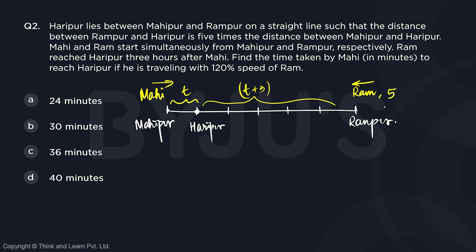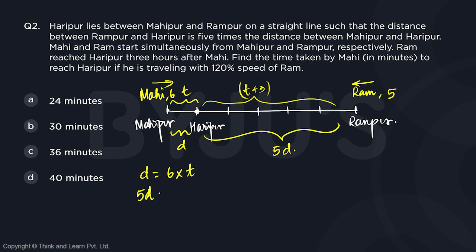If we take the speed of Ram to be 5, then 120% of 5 is 6, so Mahi's speed is 6. If the shorter distance is d, the entire distance is 5d. Mahi covers distance d at speed 6 in time t, while Ram covers distance 5d at speed 5 in time t plus 3.